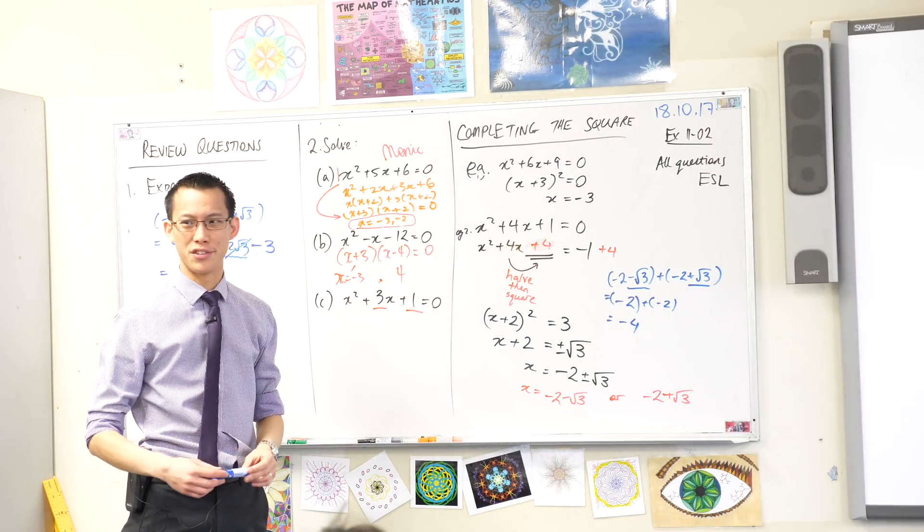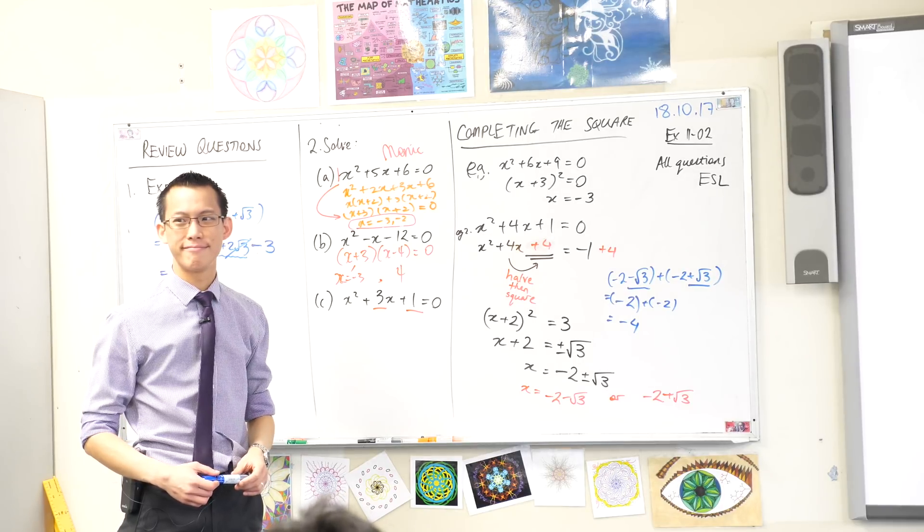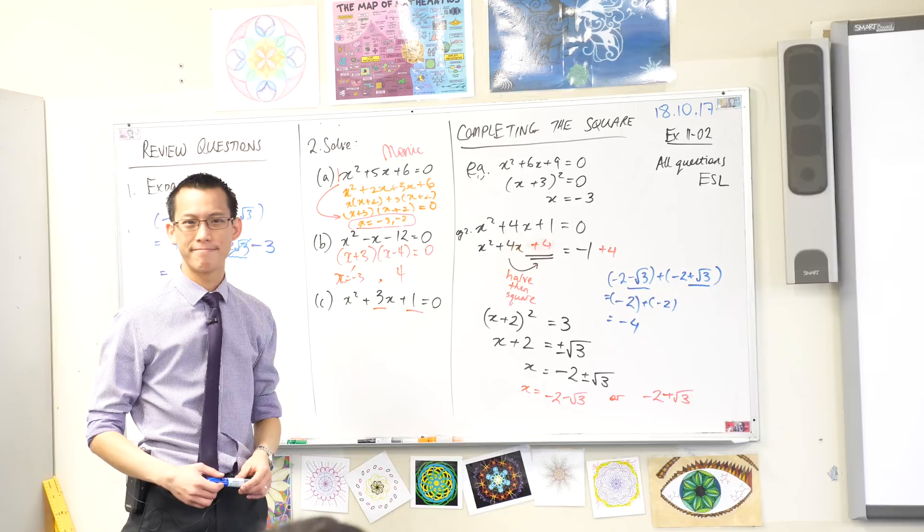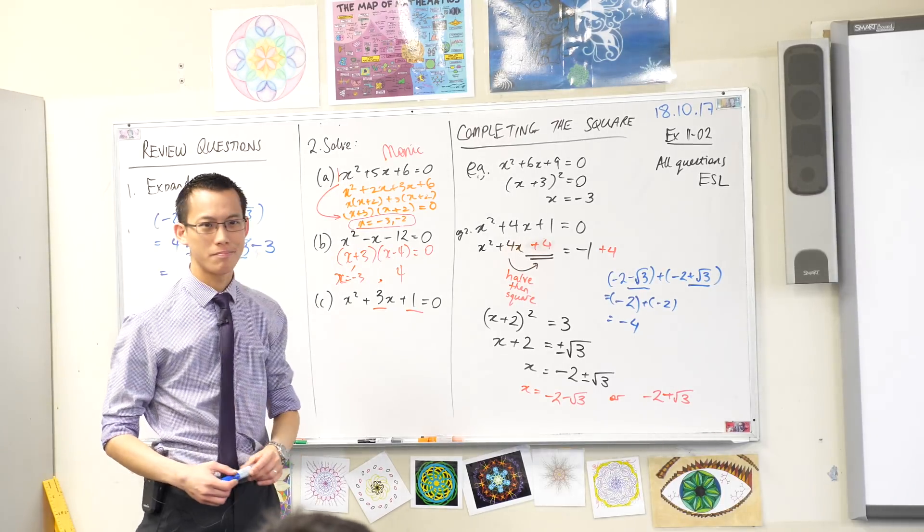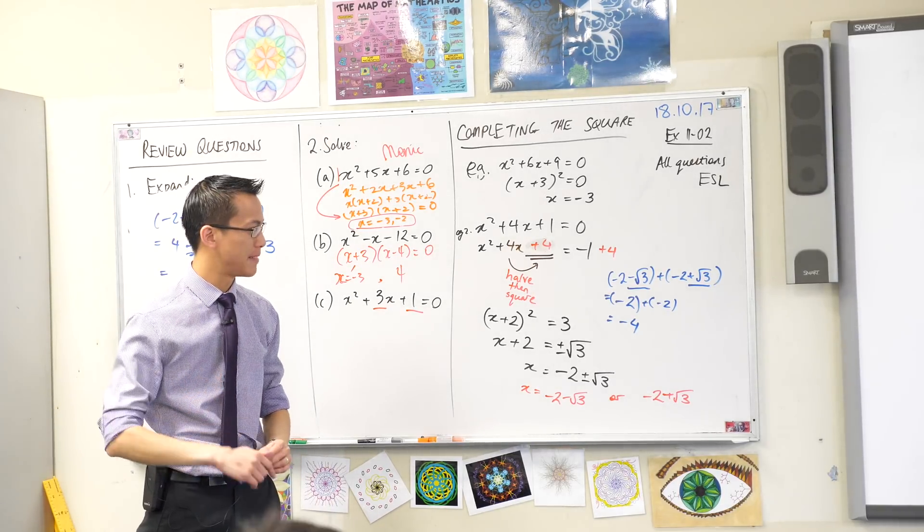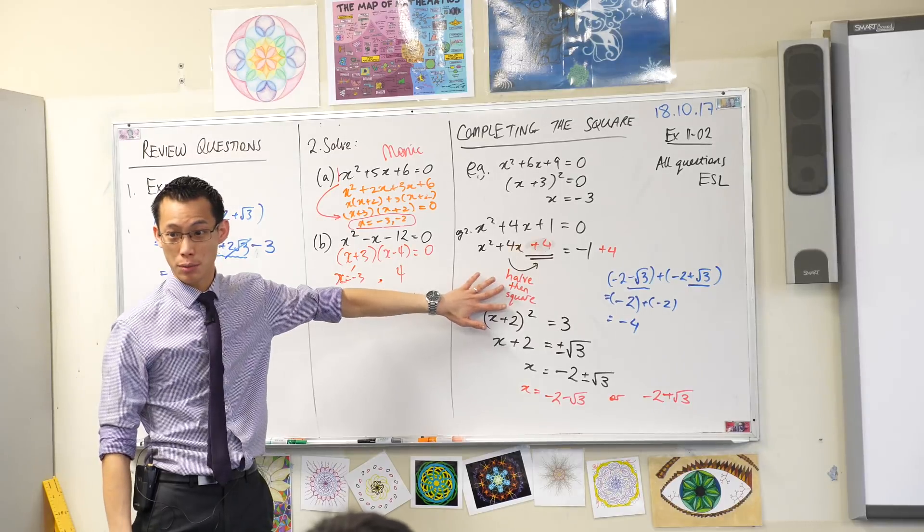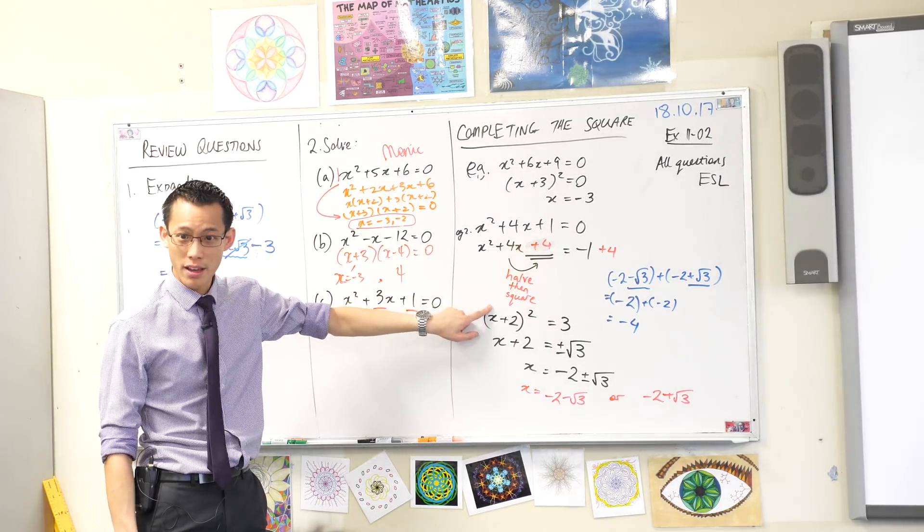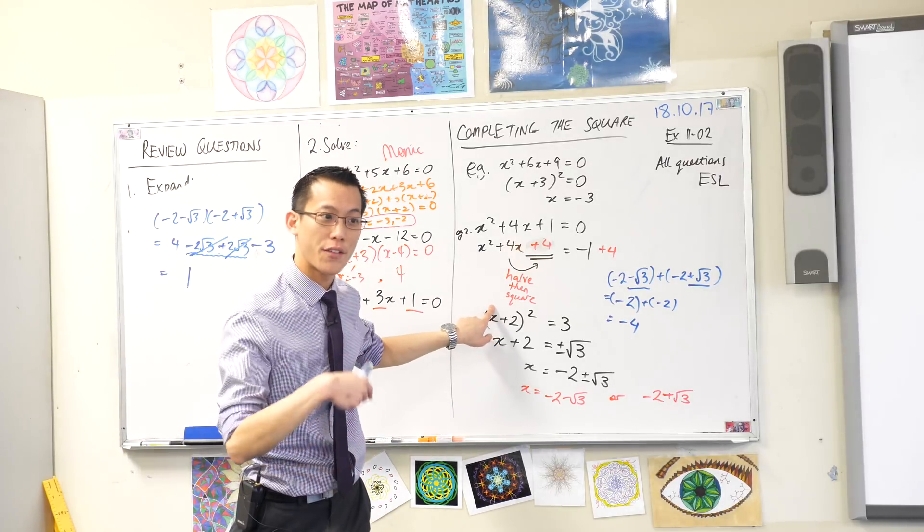I'm just going to wait for everyone's attention. Still waiting. If you haven't already, please make sure you emphasize this part here, half and then square, because that's the key part of completing the square.